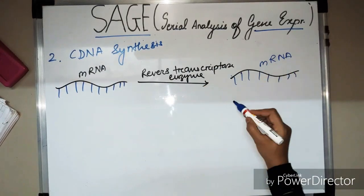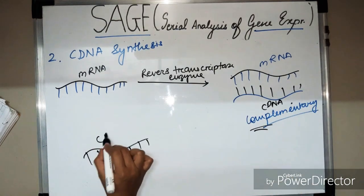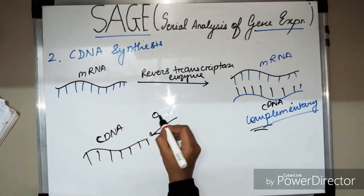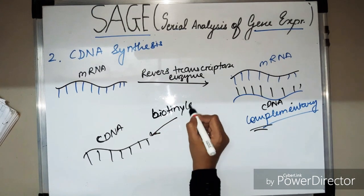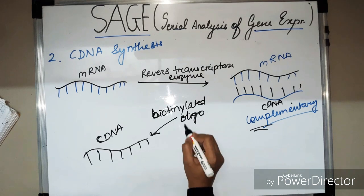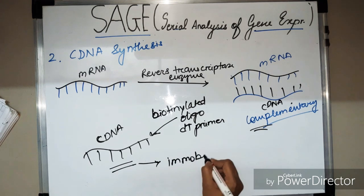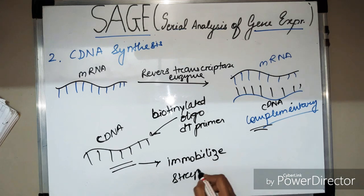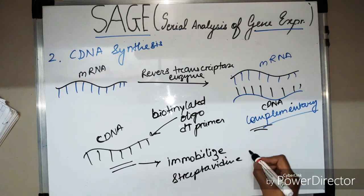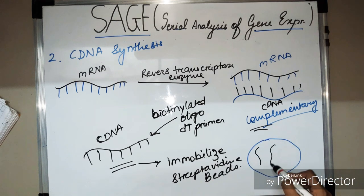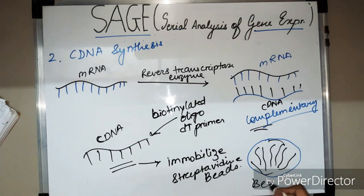The second step is the synthesis of cDNA. The cDNA synthesized from the mRNA by reverse transcription is added with a biotinylated oligo-dT primer. This biotinylation will help us to isolate cDNA further in the process. The cDNA is then immobilized to streptavidin beads — when mixed, these beads form a biotin-cDNA complex, which is a very strong bond.